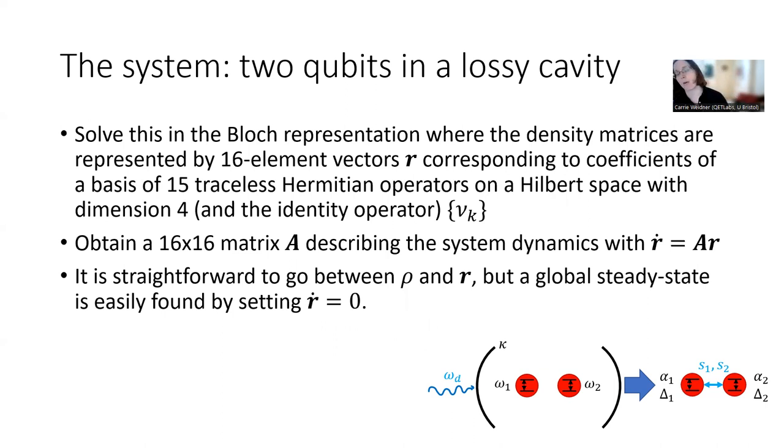Great. So what we do is we solve this in Bloch representation, where we go from density matrices to vectors. And because this density matrix describing two qubits is four by four, these vectors are going to have 16 elements. And that corresponds to a basis of 15 traceless Hermitian operators on a Hilbert space with dimension four. And combined with the identity operator, this gives us 16 operators, and we'll call these the nu sub k. And you can see the details in the manuscript. But what this allows you to do is get a 16 by 16 matrix A that describes the system dynamics. And so basically, this is a fairly straightforward system to solve. And it's, you know, finding the steady state, for example, can be seen to be reasonably trivial. Well, not trivial, but it can be done. And it is very straightforward because of this basis to go between rho and r. And it's also very straightforward to find the steady state of the system.